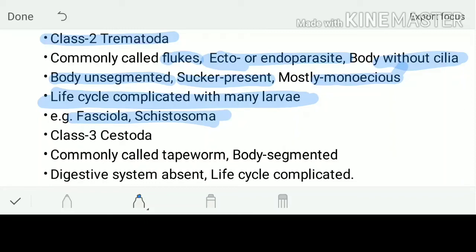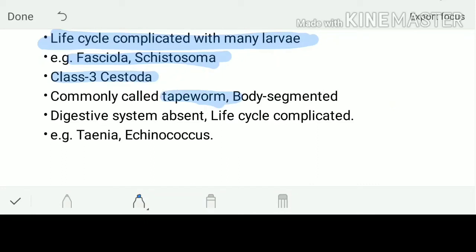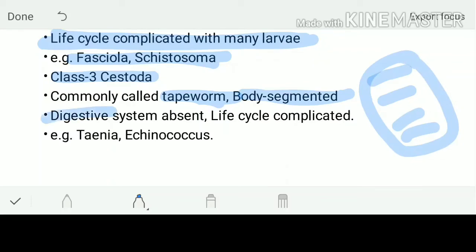Class 3 is Cestoda, commonly called tapeworms. Their body is segmented — different segments are present on the body. The digestive system is completely absent because all of them are parasites; they simply absorb already-digested material. The life cycle is complicated. Examples include the genus Taenia — with species Taenia solium, Taenia saginata, and so on.